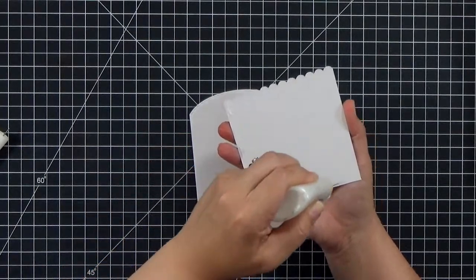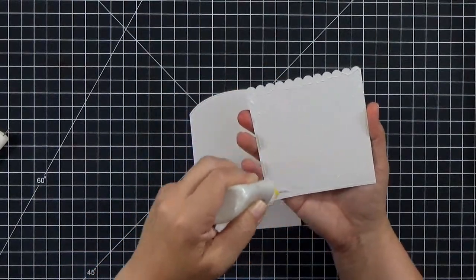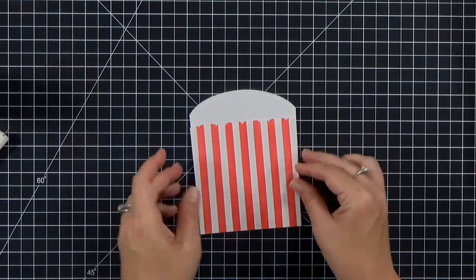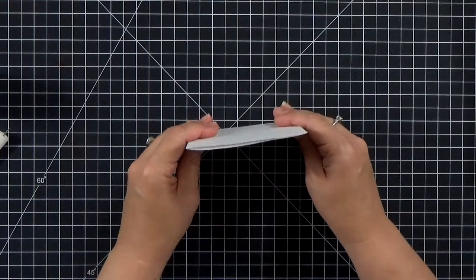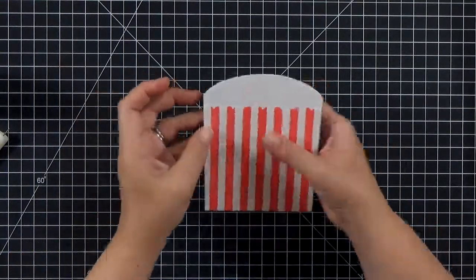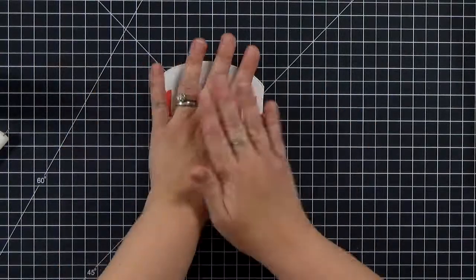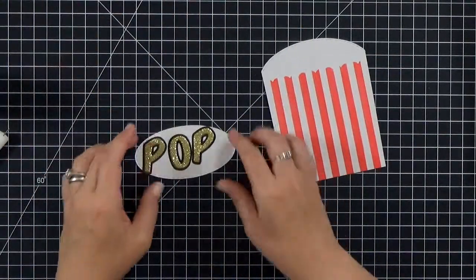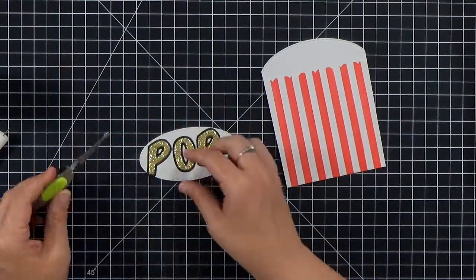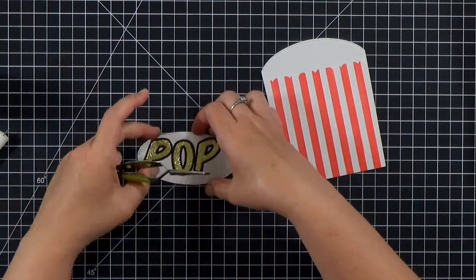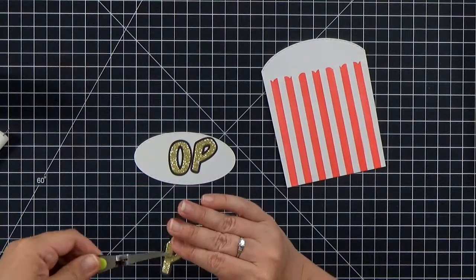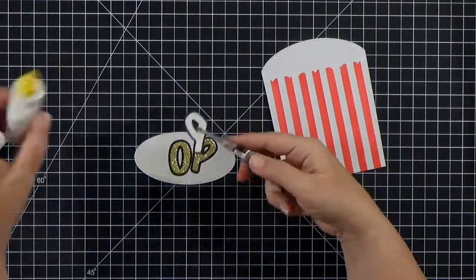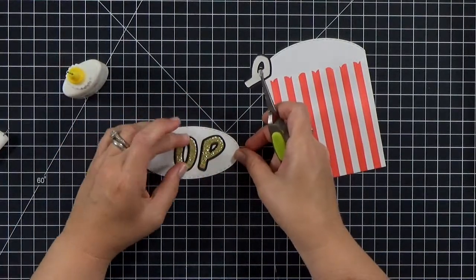So let's go ahead and adhere the bucket to the card front. I am just going to add adhesive everywhere except the top of the scallops. I want to leave some space there so that I can tuck the popcorn in when I'm adhering that. But for now, I'll just glue the rest of the bucket down. And then I want to glue the word pop to the oval. And I'm using these flat back tweezers. These are great because they have a nice wide paddle. They can hold all three parts of the letters together.